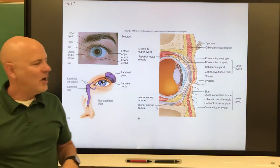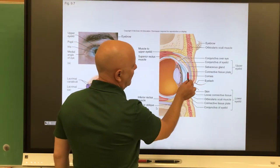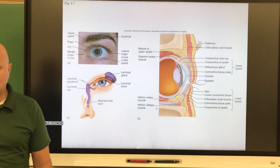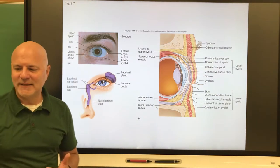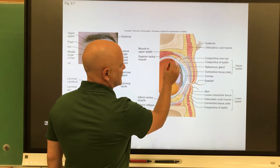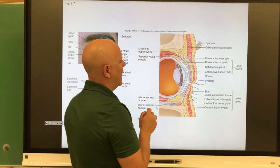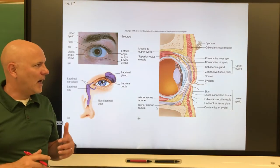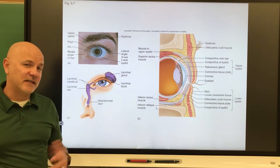On the inside layer of that eyelid is a mucous membrane called conjunctiva. Conjunctiva is a mucous membrane that lines the inner surface of the eyelid. It also comes back a little bit over sclera, which is our white portion of our eye. If you get conjunctivitis, that's an inflammation of the conjunctiva, like pink eye.